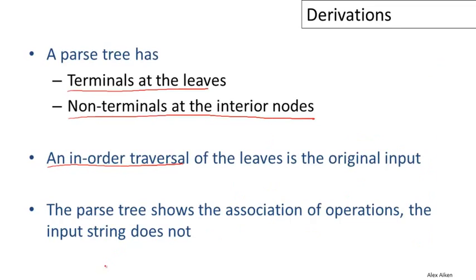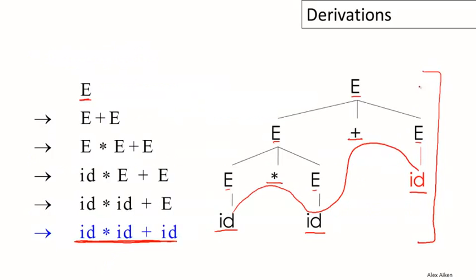Furthermore, the parse tree shows the association of the operations, and the input string does not. You may notice that the way this parse tree is constructed, the times binds more tightly than the plus because the times is a subtree of the tree containing plus. This means we would do the E times E first before we would add E. You may have wondered, how did I know to pick this parse tree? Actually, if you think about it, there are several derivations that will give me a different parse tree where the times is towards the root and the plus is nested inside the times. Let's not worry about that for right now. Let's just say that somehow we knew that this was the parse tree we wanted, and I gave you a derivation that produces that parse tree.